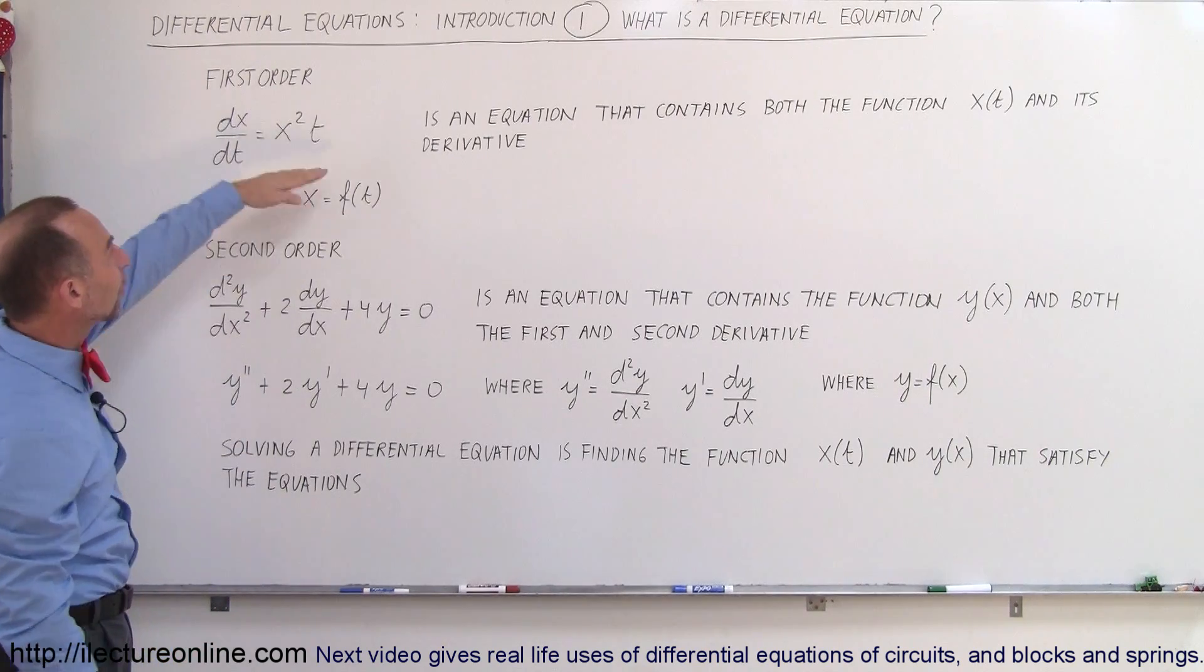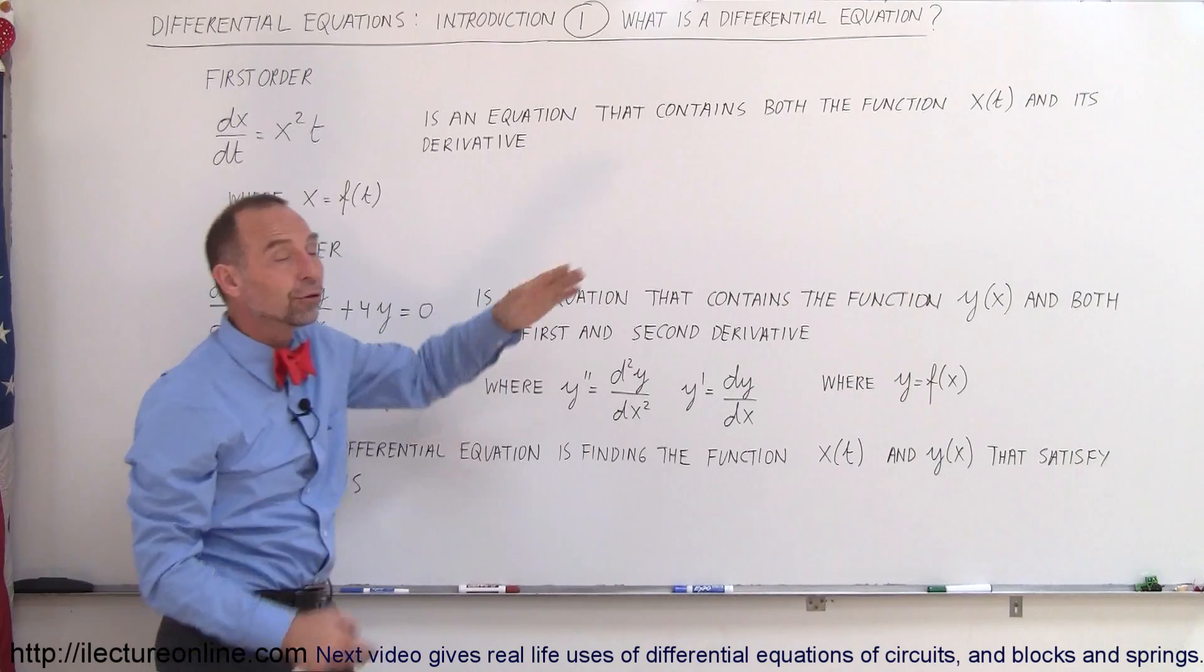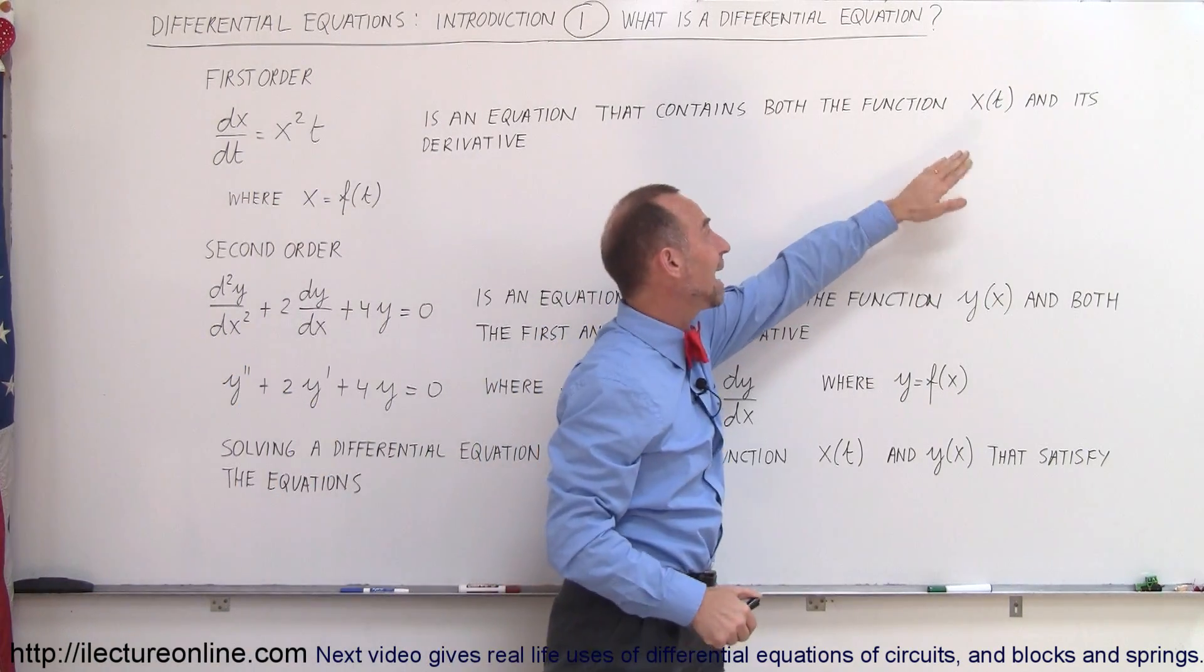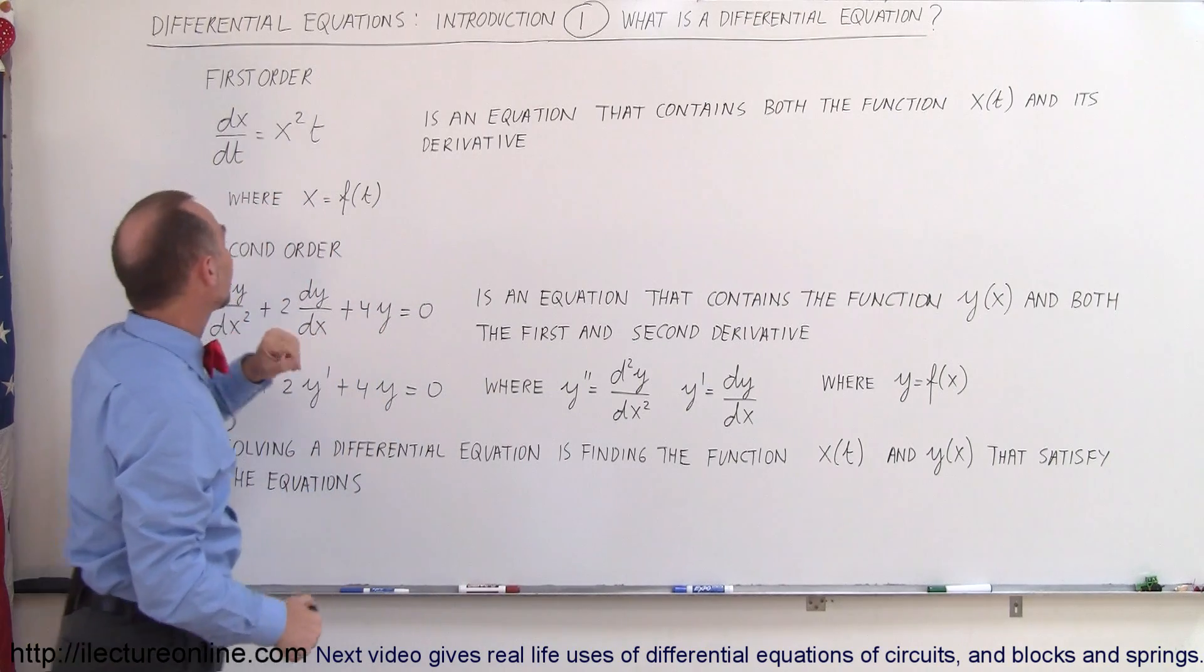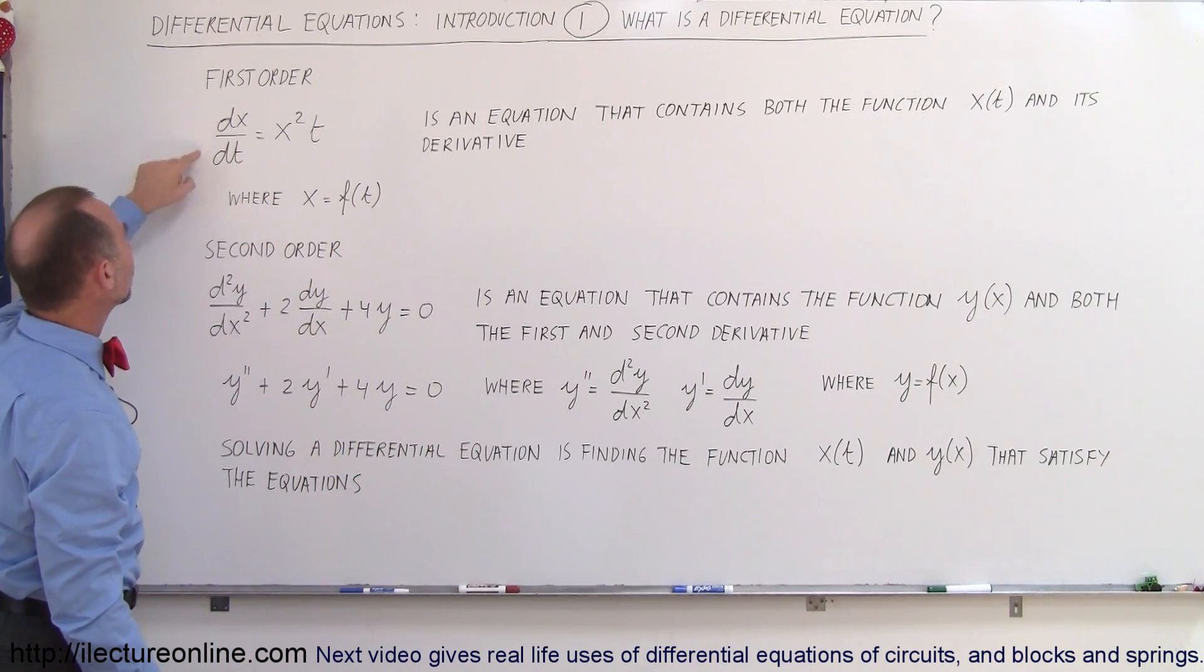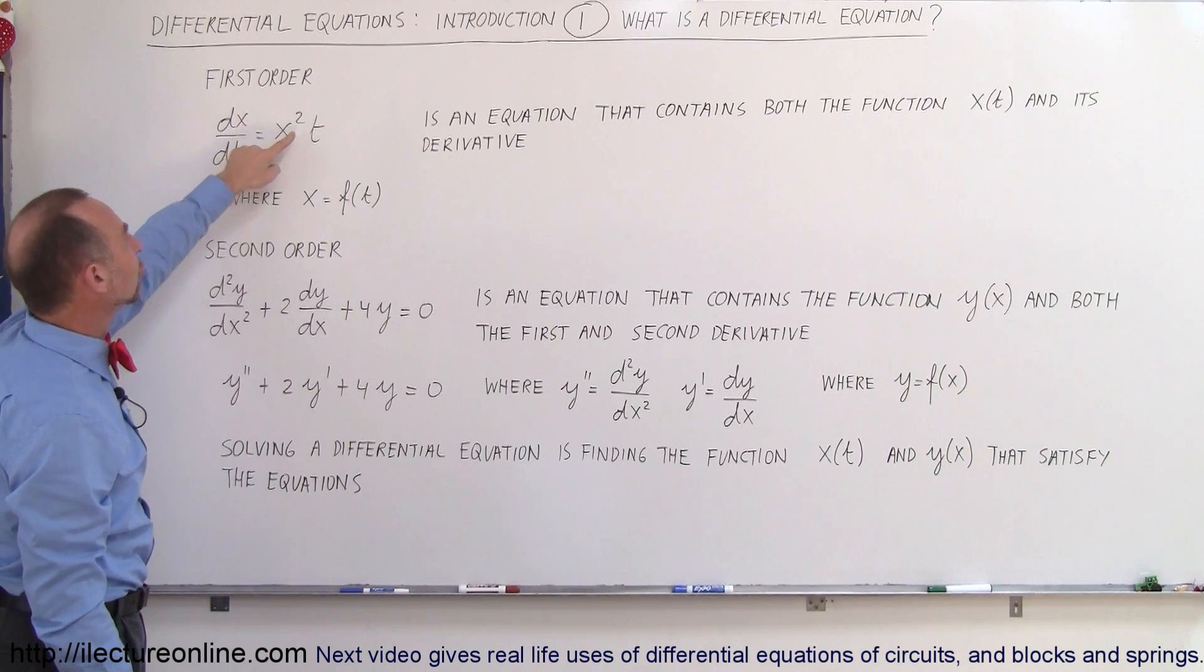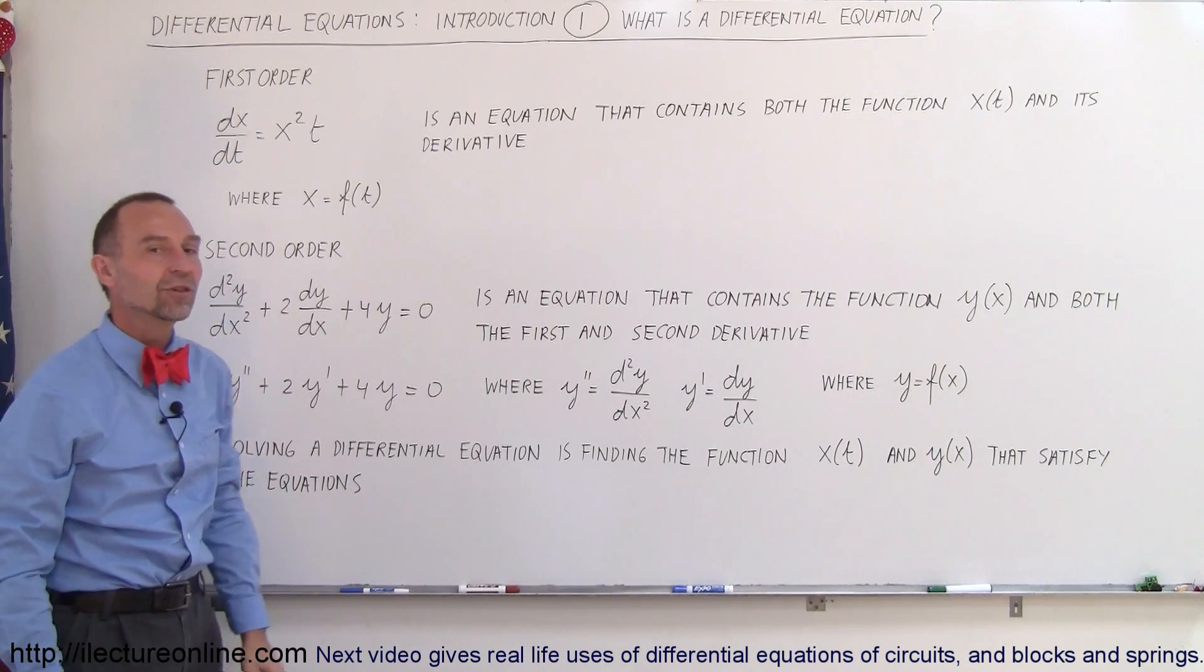A first-order equation is an equation that contains both the function, in this case the function is x, x is a function of t, and its derivative. So here we have dx/dt which is the derivative of the function x with respect to time, is equal to the function squared times the variable t.